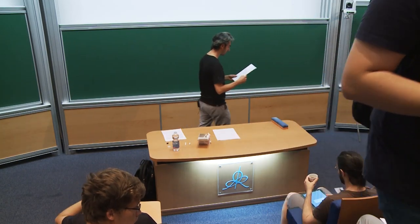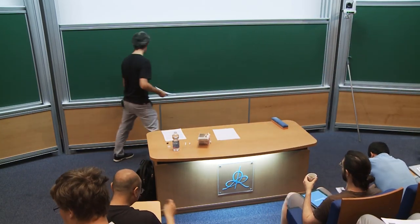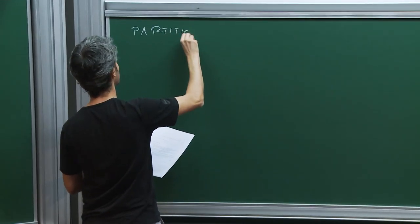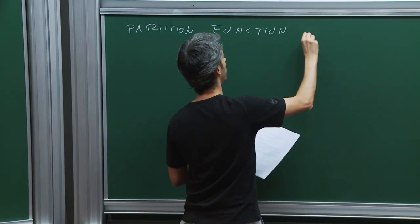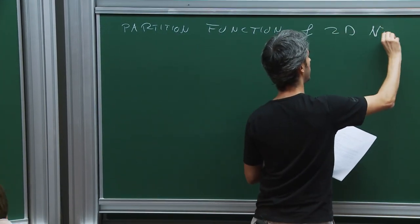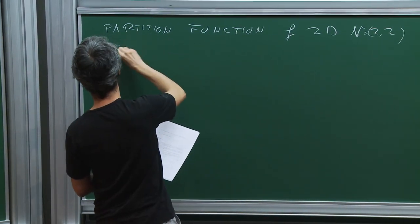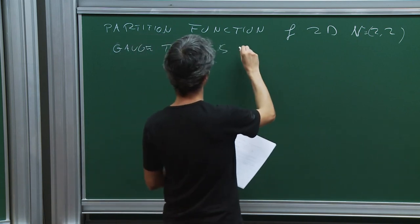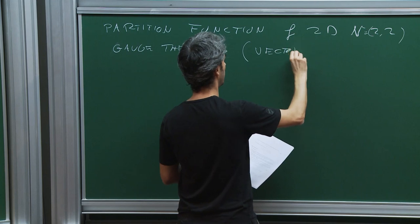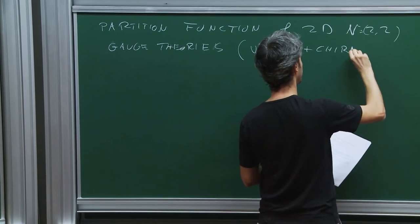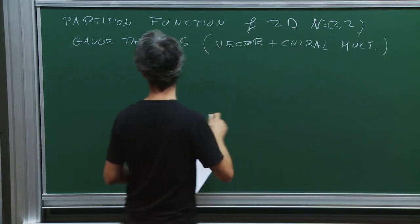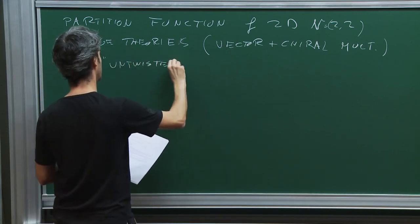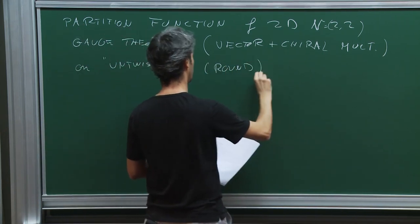Yesterday we were in the process of forming the localization computation of the partition function of two-dimensional N=2,2 gauge theories, restricting to vector and chiral multiplets on the untwisted round S².